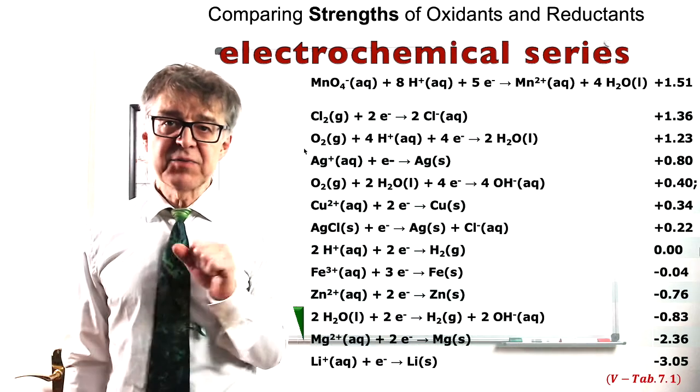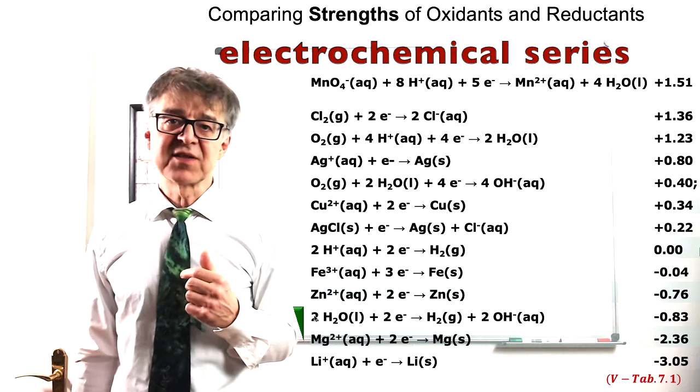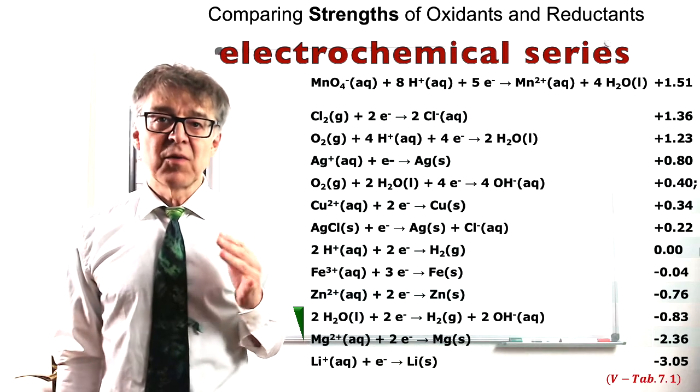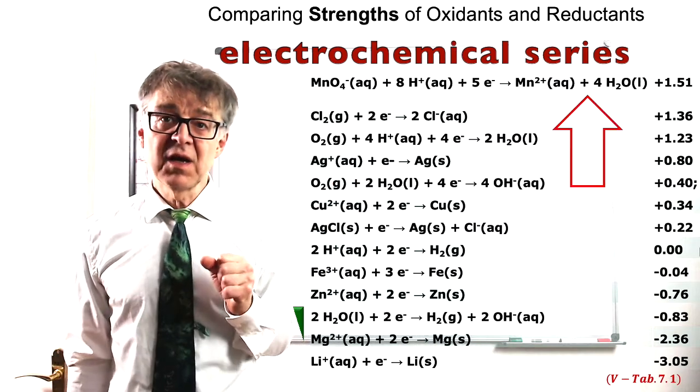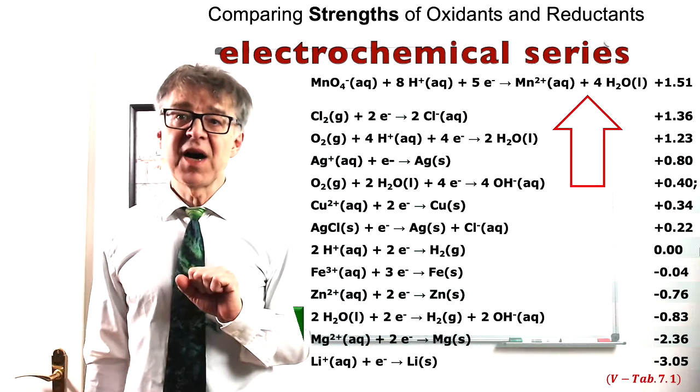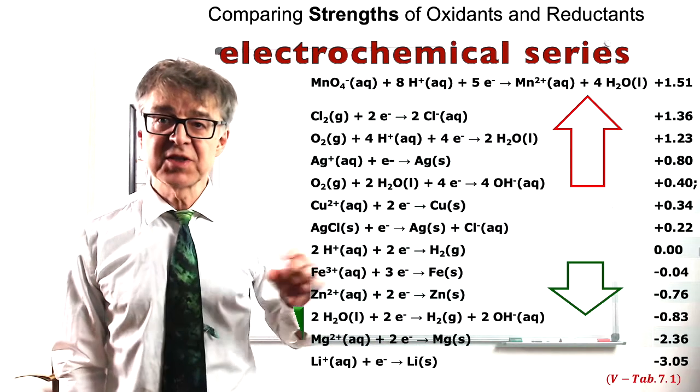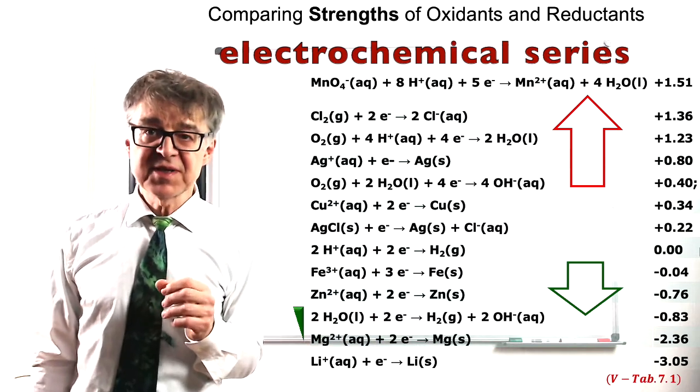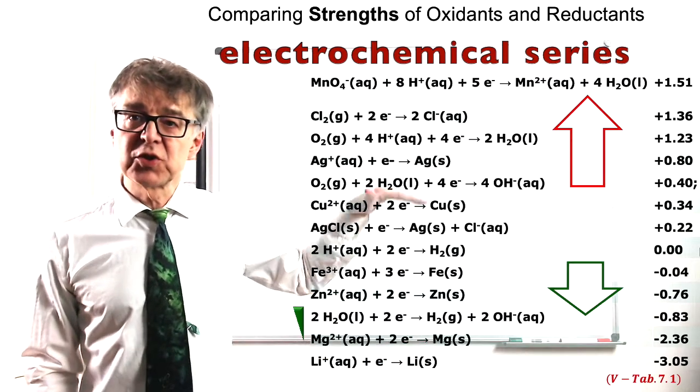At the bottom, redox reactions that easily donate electrons like zinc and magnesium are listed. So the redox half reactions at the top are strongly oxidizing, the half reactions on the bottom are strongly reducing. If we combine two half reactions from the electrochemical series, the electrons will only flow voluntarily from bottom to top.